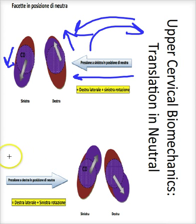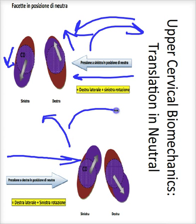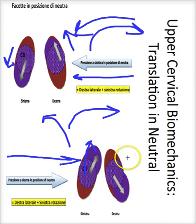If we reverse this and produce a right translation — moving from left to right — then we have the opposite movement. We produce a left side bending which produces a right rotation, because of a left anterior movement of the convex C0 on the concave C1 and a posterior movement of the right C0 on the concave C1.